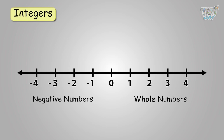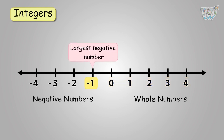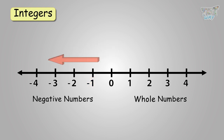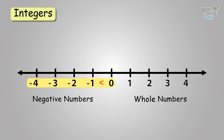Integers is the list of numbers that has negative numbers and whole numbers starting from 0, where negative 1 is the largest negative number. So, the value of negative numbers decrease as we move towards the left. This is why negative 2 is smaller than negative 1, and negative 3 is smaller than negative 2, and so on and so forth. So remember, all values in negative numbers are always less than 0.